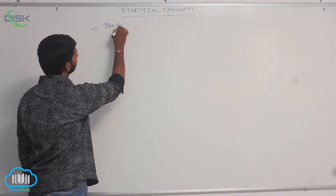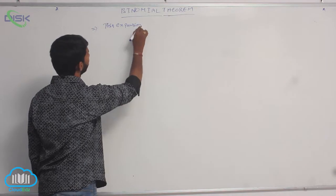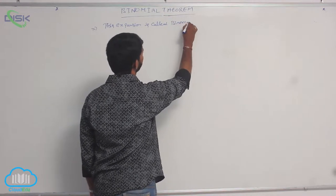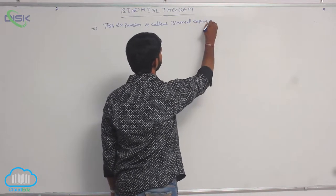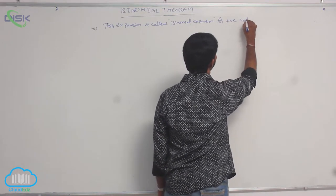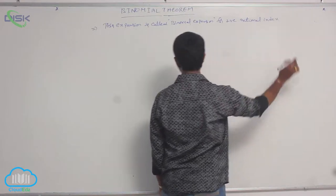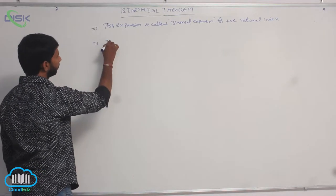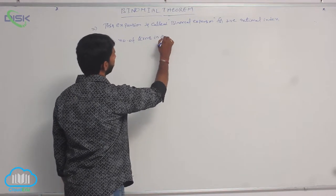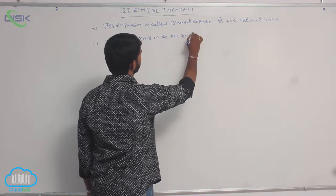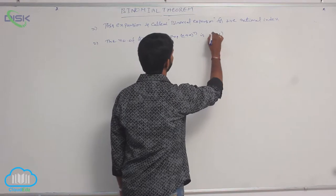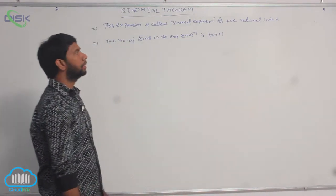This expansion is called binomial expansion for positive rational index. The number of terms in the expansion of (x + a)^n is n plus 1.